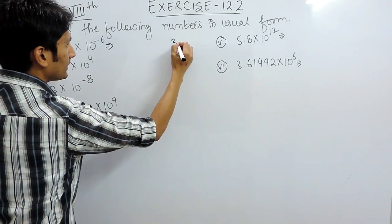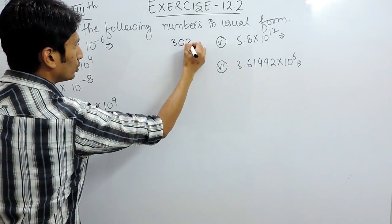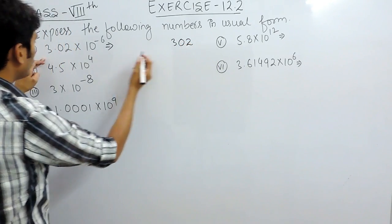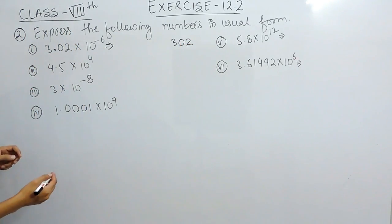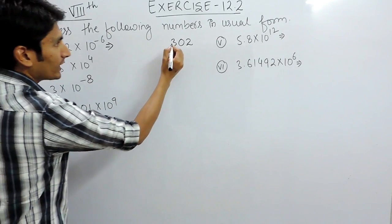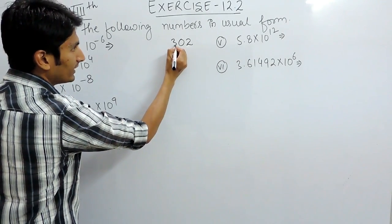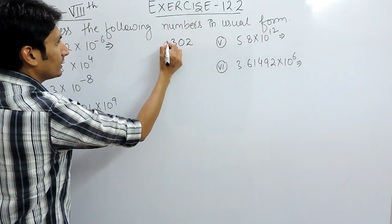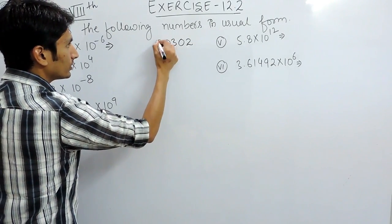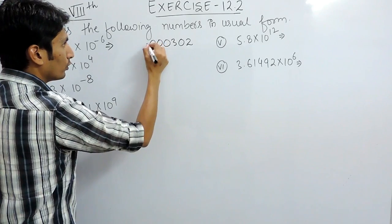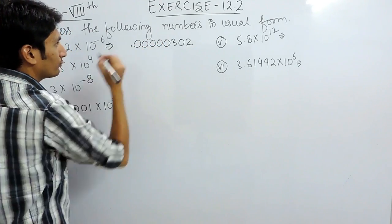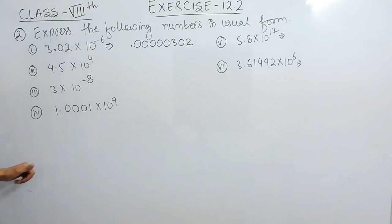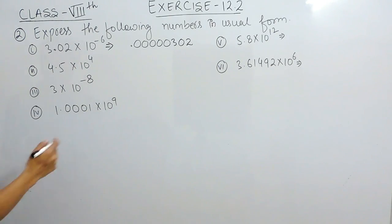The number is 3.02 and you have to shift the decimal 6 places to the left. So counting: 1, 2, 3, 4, 5, 6 — you shift the decimal till 6 digits, and the answer would be this.